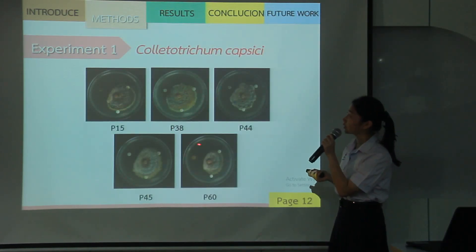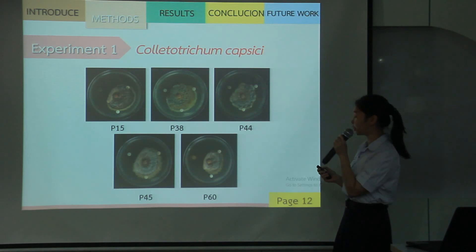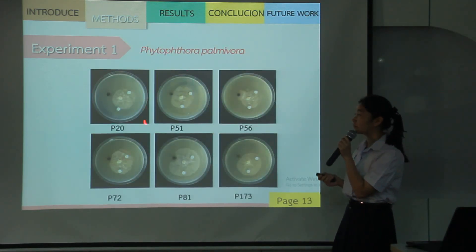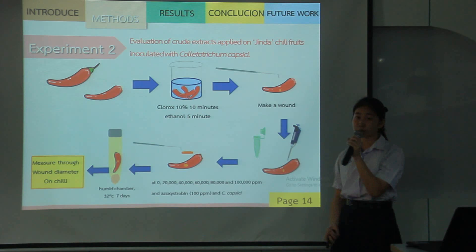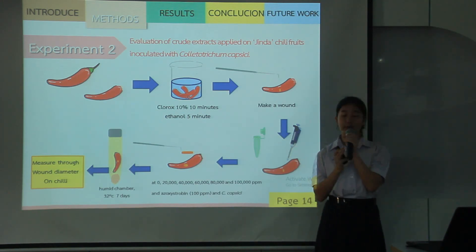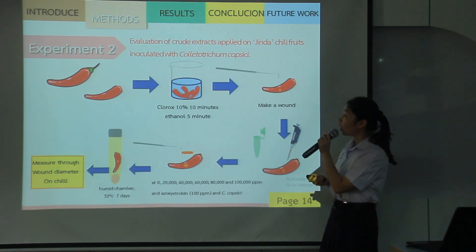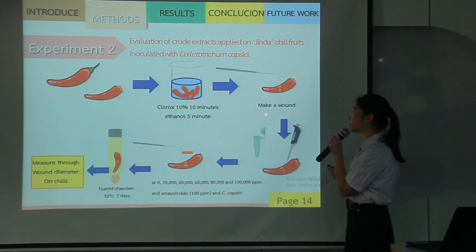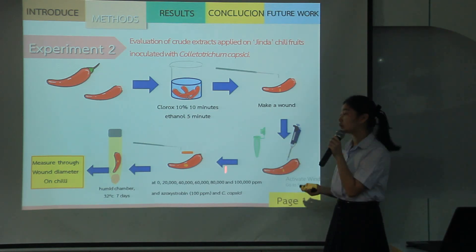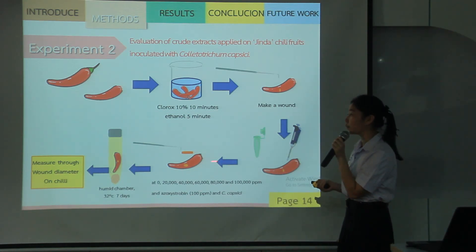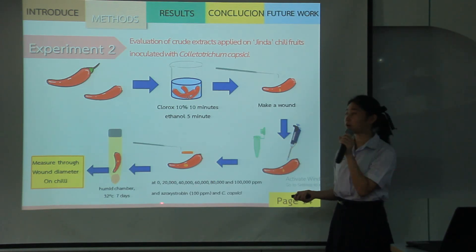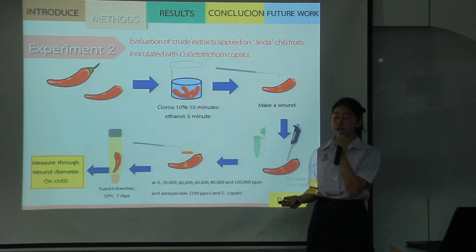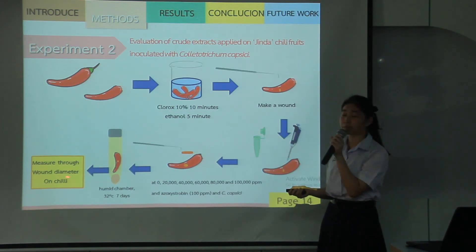This is the result for Colletotrichum capsicum and for Phytophthora palmivora. Experiment on evaluation of extract applied on chili fruit, inoculated with Colletotrichum capsicum. First, surface disinfection by 0.10% ethanol, then make a wound and apply the extract from Piper Rockcast. Then concentrate and keep at 22 degrees Celsius for one week. I will evaluate results by measuring the lesion diameter on the chili.